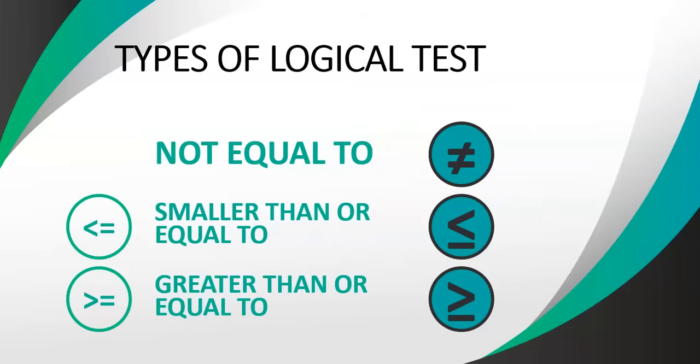Smaller than or equal to is exactly the same — you put the smaller than symbol first, then the equal to symbol. So it's the way you say it: smaller than or equal to.